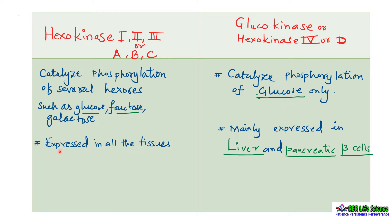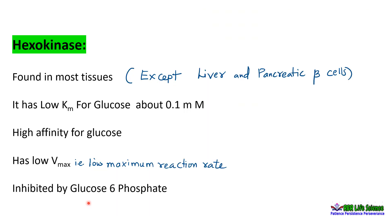Hexokinases 1, 2, 3 are expressed in all the tissues of the body, whereas glucokinase is mainly expressed in liver and pancreatic beta cells only. Hexokinase enzyme can be found in all the tissues of the body where cellular metabolism occurs, with the exception of liver and pancreatic beta cells.